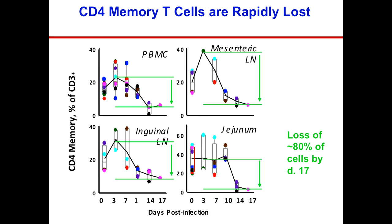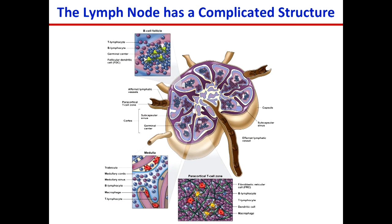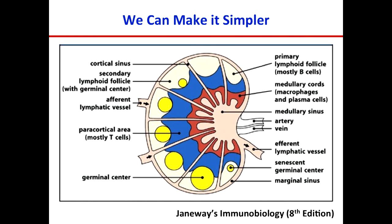The lymph node is not just a bag of lymphocytes — it actually has a complex structure. This is a slide given to me by Jake Estes showing the complicated structure with subcapsular sinuses, germinal centers, and pericortical T cell zones. Going back to Janeway's Immunobiology, you can see there are pericortical T cell areas, which are mostly T cells; lymphoid follicles, which are mostly B cells; and then germinal centers where the T cells and B cells interact.